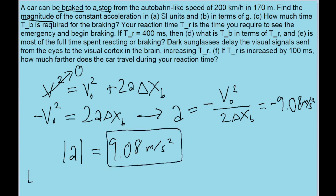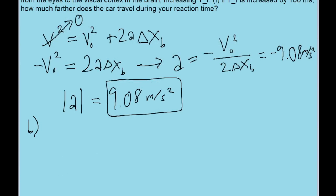Part B asks for the exact same answer except in terms of g. So what that means is it wants us to write the acceleration as some number times g, 9.8 meters per second squared, the acceleration due to gravity. So to do this, we simply just take the value we just found and then divide it by 9.8 meters per second squared, because that'll get us the ratio that we need of this acceleration to the one for g.